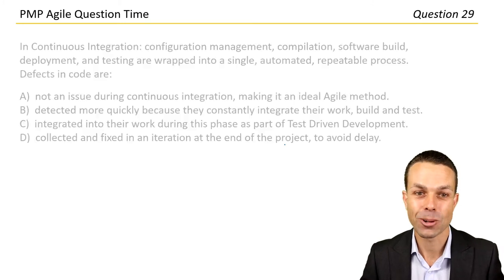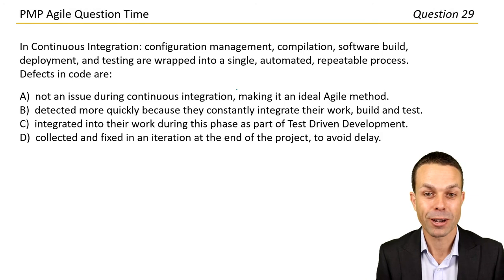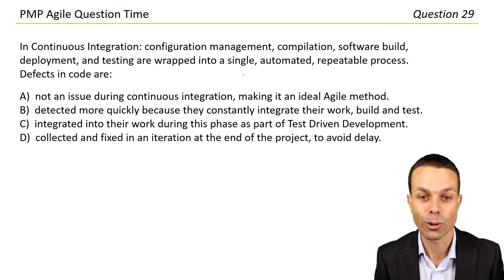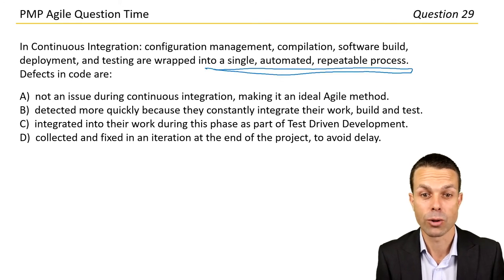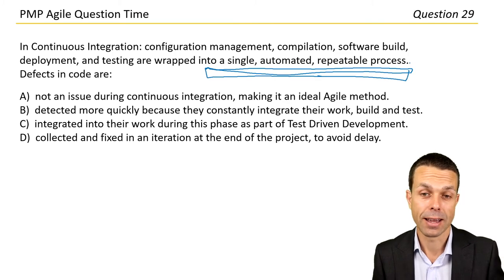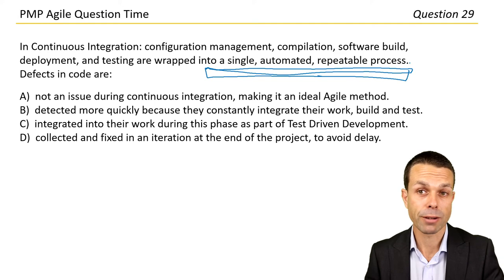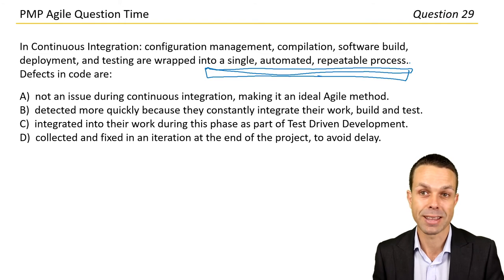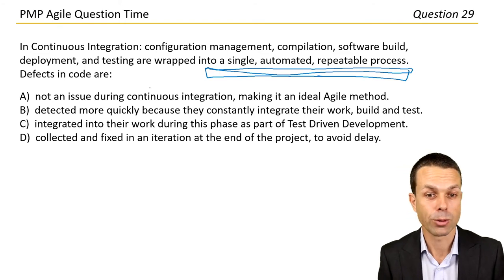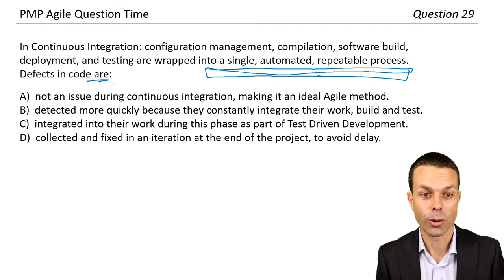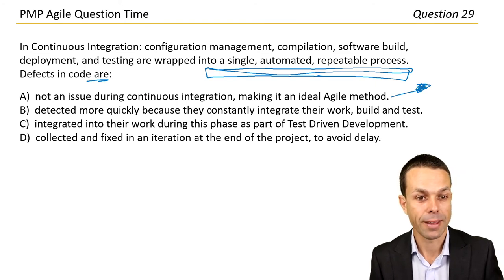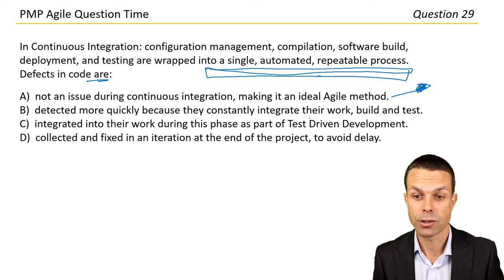In continuous integration, configuration management, compilation, software build, deployment, and testing are wrapped into a single automated repeatable process. This allows a mature team to deliver something very quickly. The question asks about defects in continuous integration: are they not an issue, detected more quickly, integrated as part of TDD, or collected and fixed at the end?